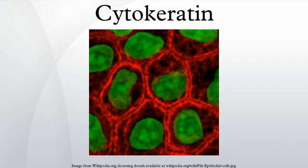Cytokeratins interact with desmosomes and hemidesmosomes, thus collaborating in cell-cell adhesion and basal cell–underlying connective tissue connection. The intermediate filaments of the eukaryotic cytoskeleton, of which cytokeratins are one of its three components, have been shown to associate also with the ankyrin and spectrin complex protein network that underlies the cell membrane.